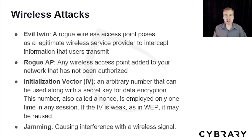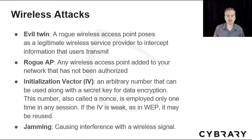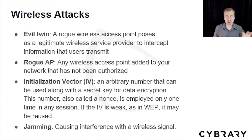An initialization vector is an arbitrary number used along with a secret key for data encryption. This number, also called a nonce, is employed only once in any session. If the IV is weak, as in the case of Wireless Equivalency Protocol — WEP — it may be reused, creating a vulnerability.